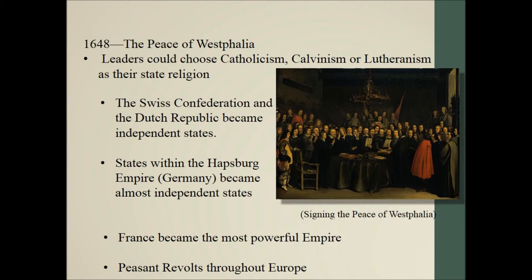You also have some other countries being formed during this time: the Swiss Confederation and the Dutch Republic, both made independent with the condition that they could not pick sides in future wars. The German states were given their independence and essentially became almost independent states, which is a big reason why you don't get modern Germany forming until 1871 or 1872. The outcome of the Thirty Year War: France becomes the most powerful country in Europe. Not everyone is happy — you've got peasant revolts happening throughout Europe, mostly peasants rising up against the power structures being developed because of the Thirty Year War.